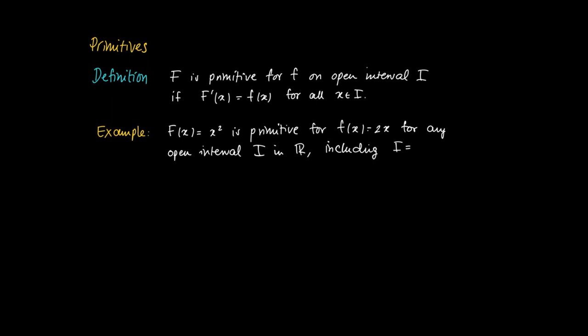So now you may question: how many primitives does a function have? Well actually, if I know a primitive of a function, then I can easily construct other primitives. Like here, we have G(x) = x² + 3, so we just add a constant to capital F. Then this is also a primitive for f, since taking the derivative of capital G gives 2x, which equals f(x).